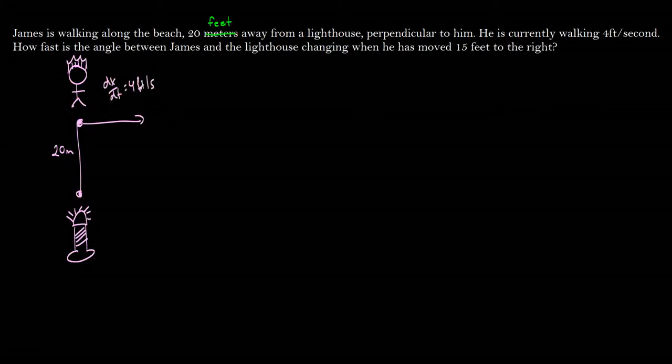We want to know how fast the angle between James and the lighthouse is changing when he's moved 15 feet to the right. So if we give in theta here, we want to know d theta/dt when x is equal to 15. And this might seem crazy to you because what do you mean we have angles in here?